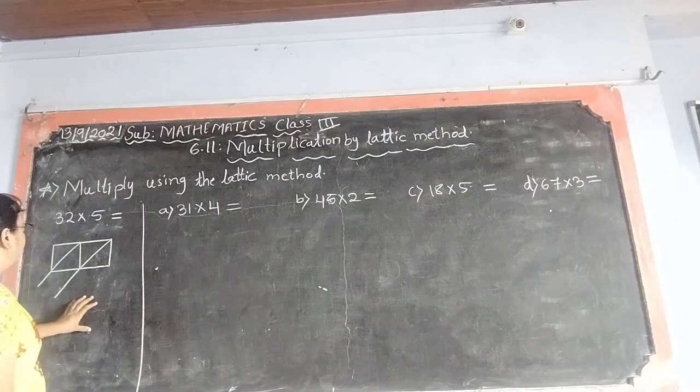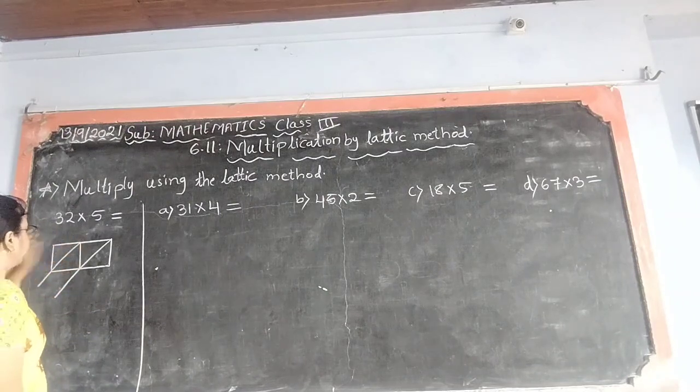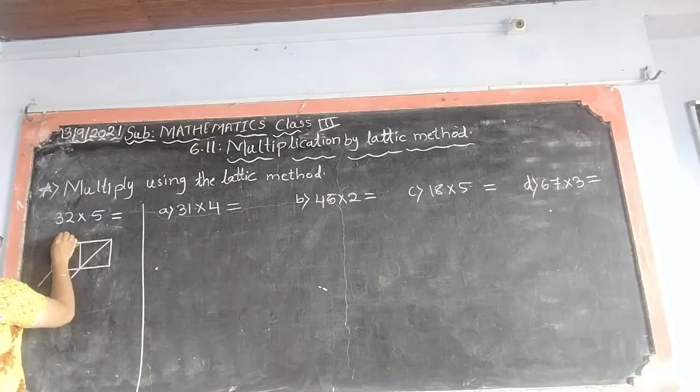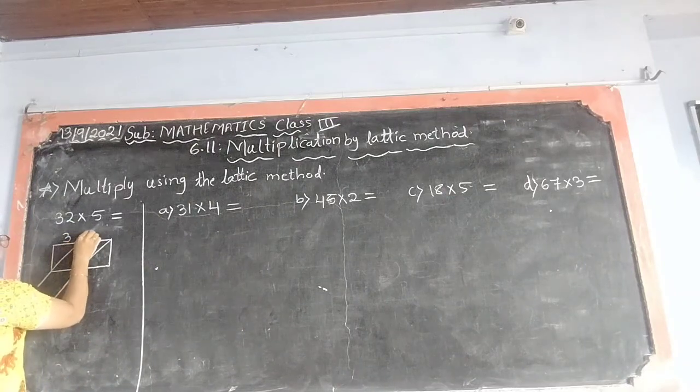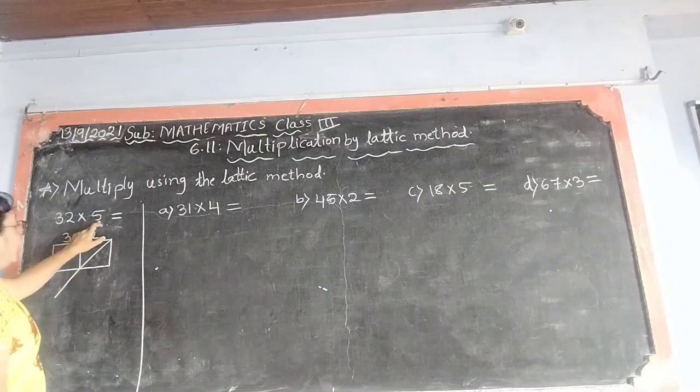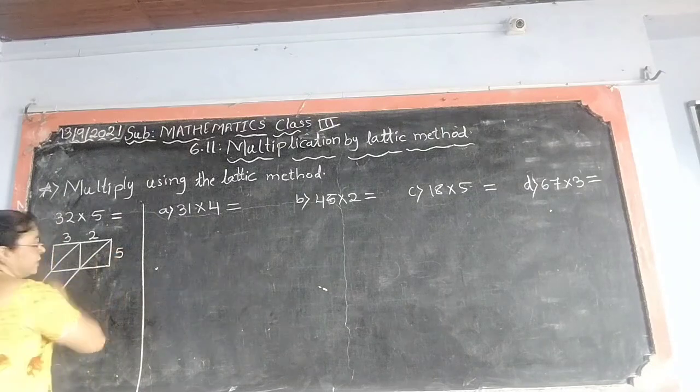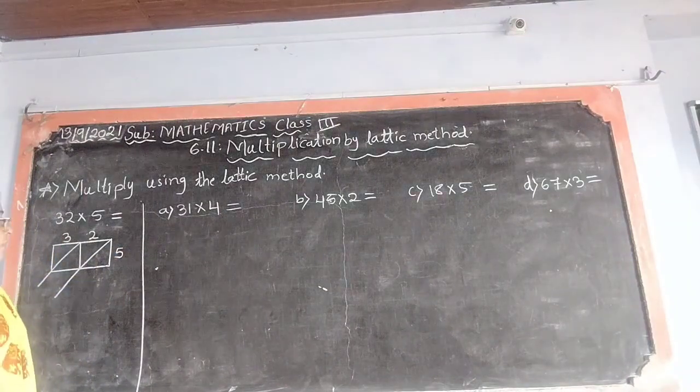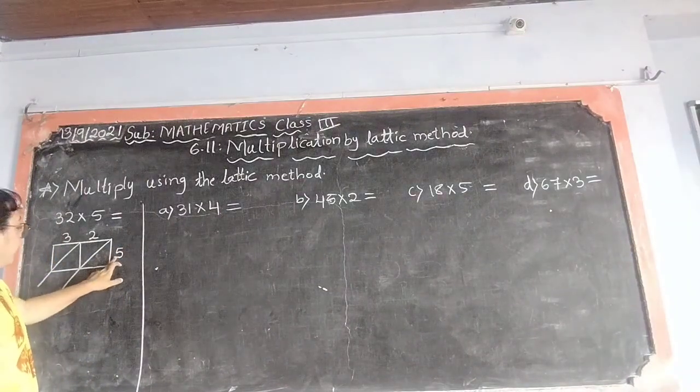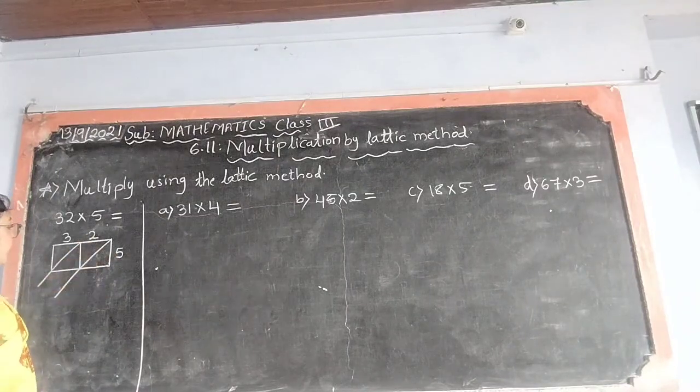After that, what we have to do, first we have to write the multiplicand here, top of the box. 32, ones place this side and then tens place this side. And multiplier 5 out of the box on this side. Now what we have to do, we have to read 5 table till 2. 5 ones are 5, 5 twos are 10.